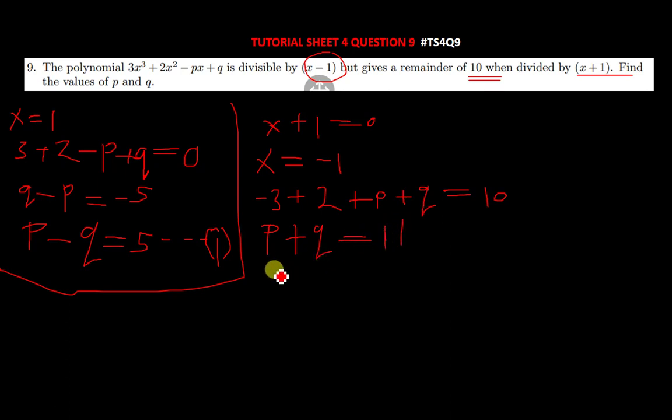You can make p the subject from the first equation. You can use any equation, but I like using the first equation. So, 5 plus q is equal to p. Meaning where p is, we put 5 plus q, and then we say plus q equals 11.